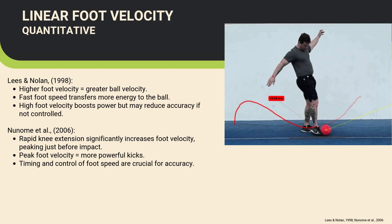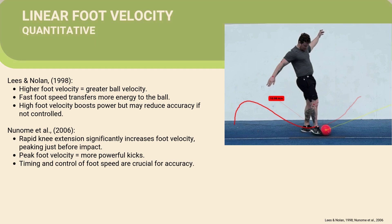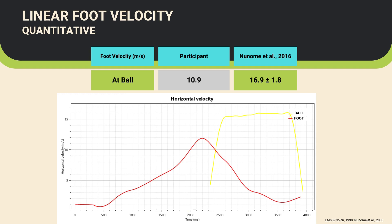Linear foot velocity is another key determinant of ball velocity. According to Lees and Nolan, higher foot speed at impact directly correlates with greater ball velocity. Nanou May and colleagues found that rapid knee extension increases foot velocity, peaking just before impact. However, balancing foot speed with accuracy is essential for effective kicking. On the graph shown, the red line represents linear foot velocity and yellow represents horizontal ball velocity. The intersection of ball and foot contact does not occur at the foot's peak velocity, due to a slowing occurrence where the foot begins to decelerate prior to contact and continues to slow thereafter.